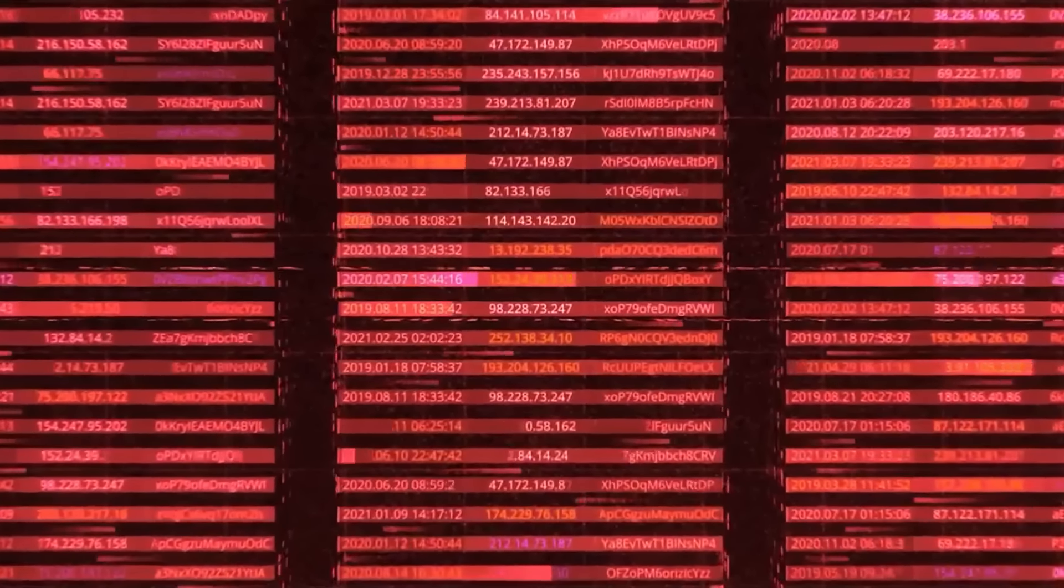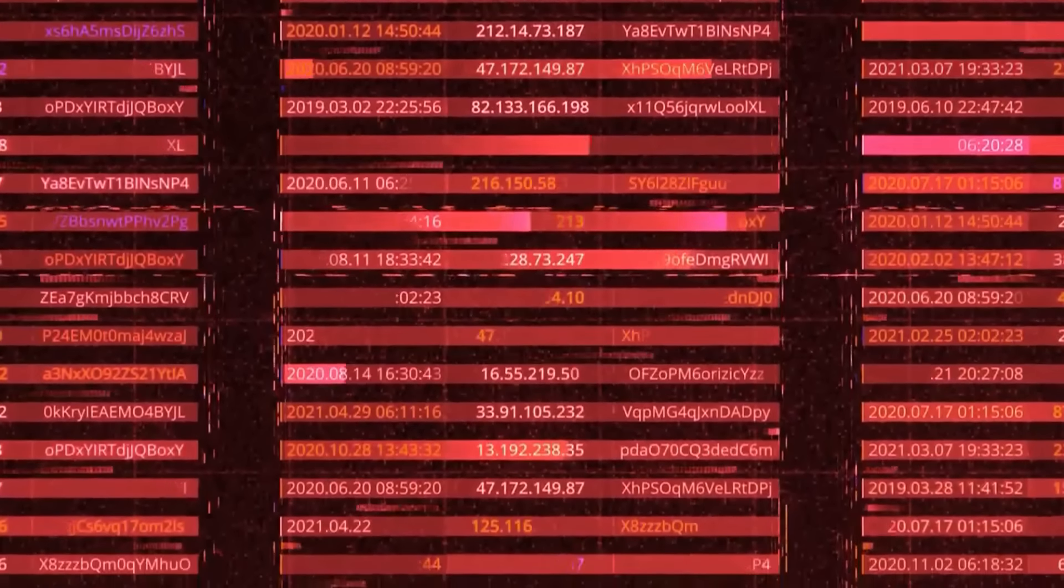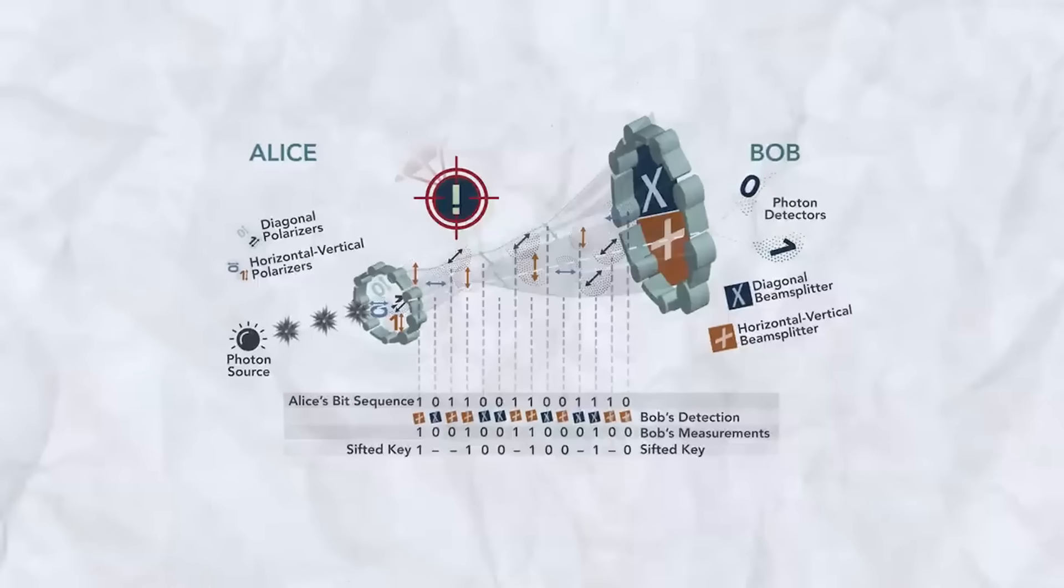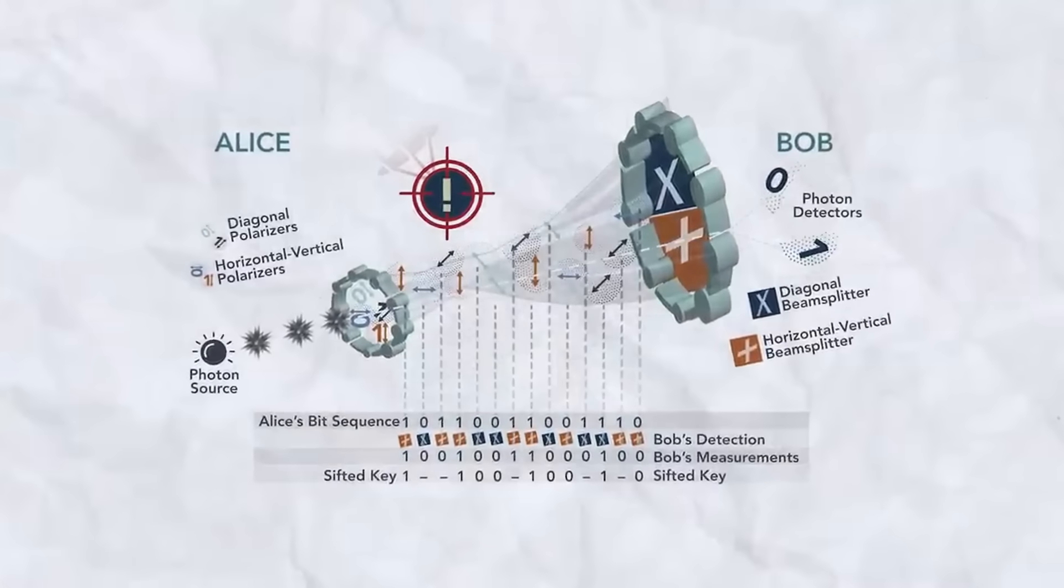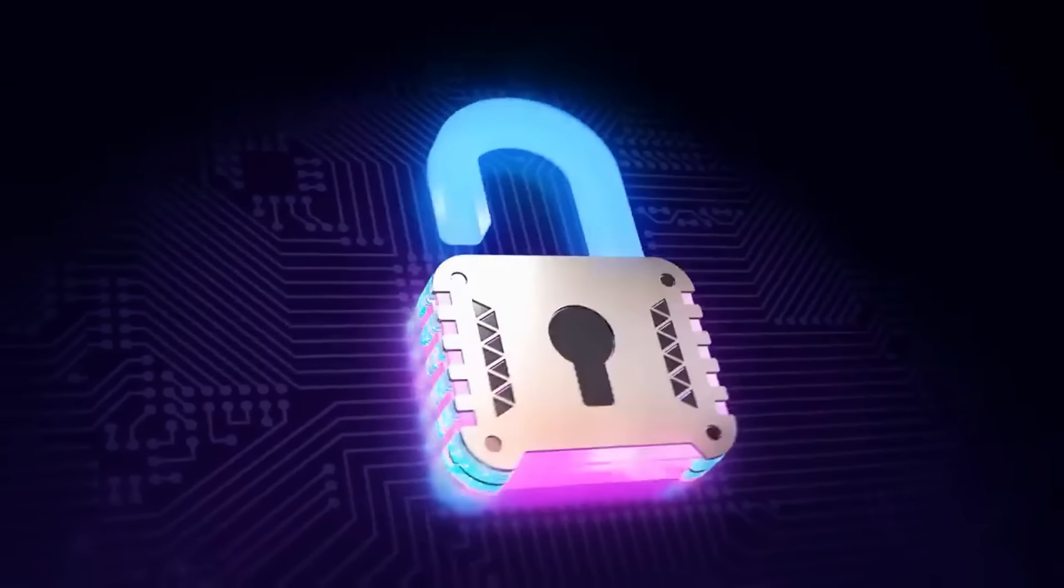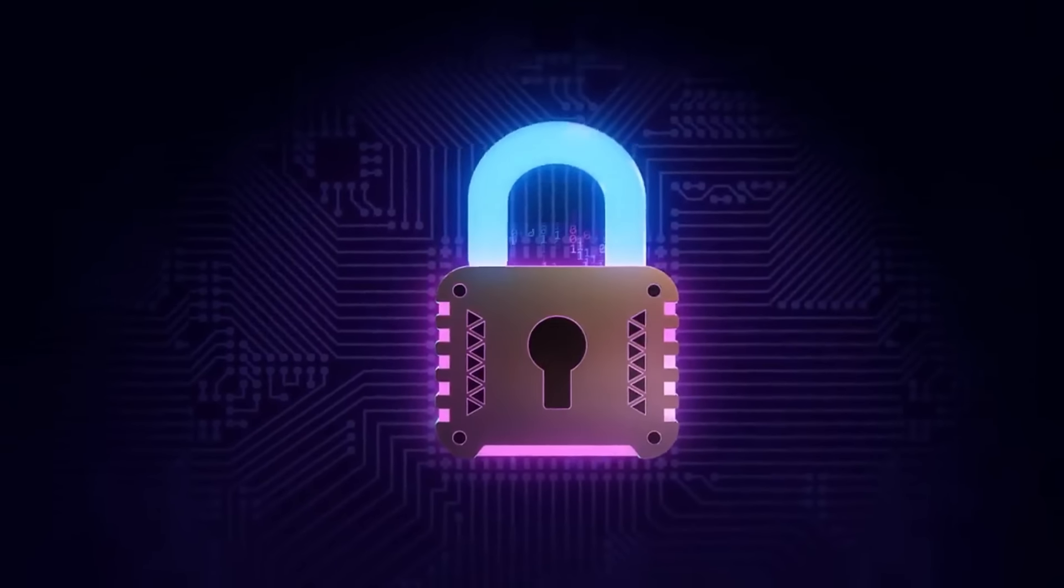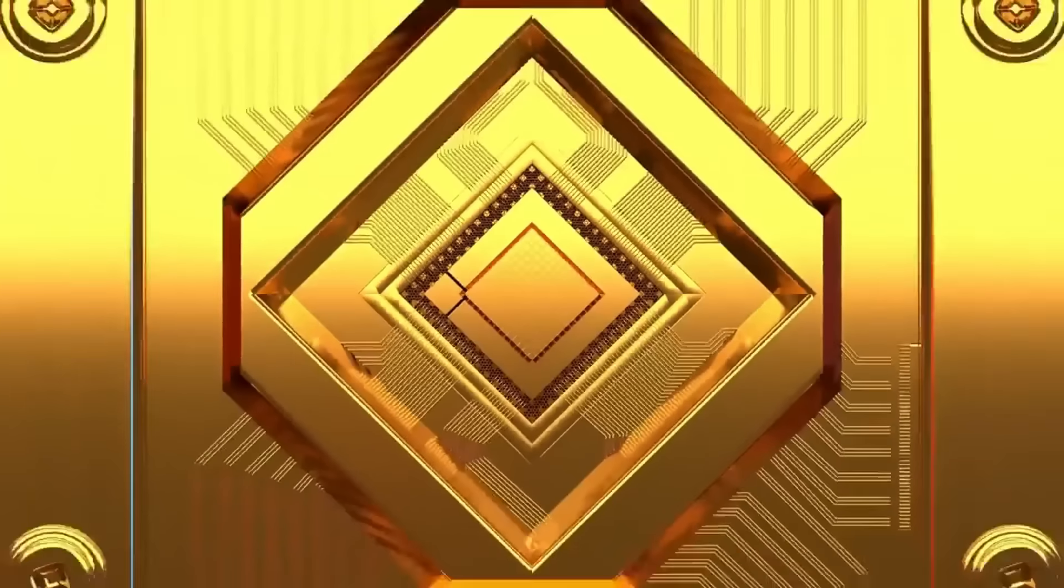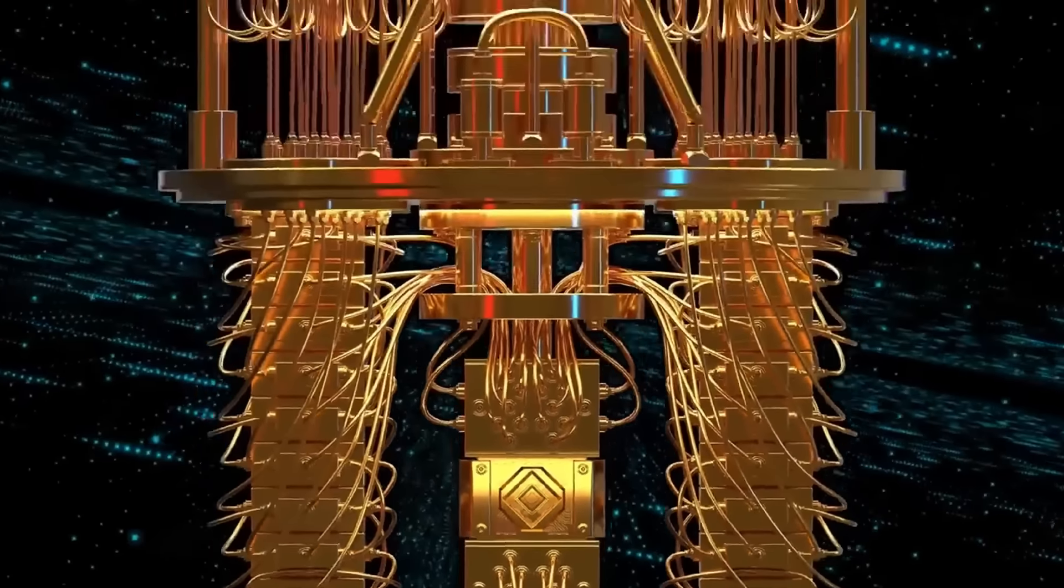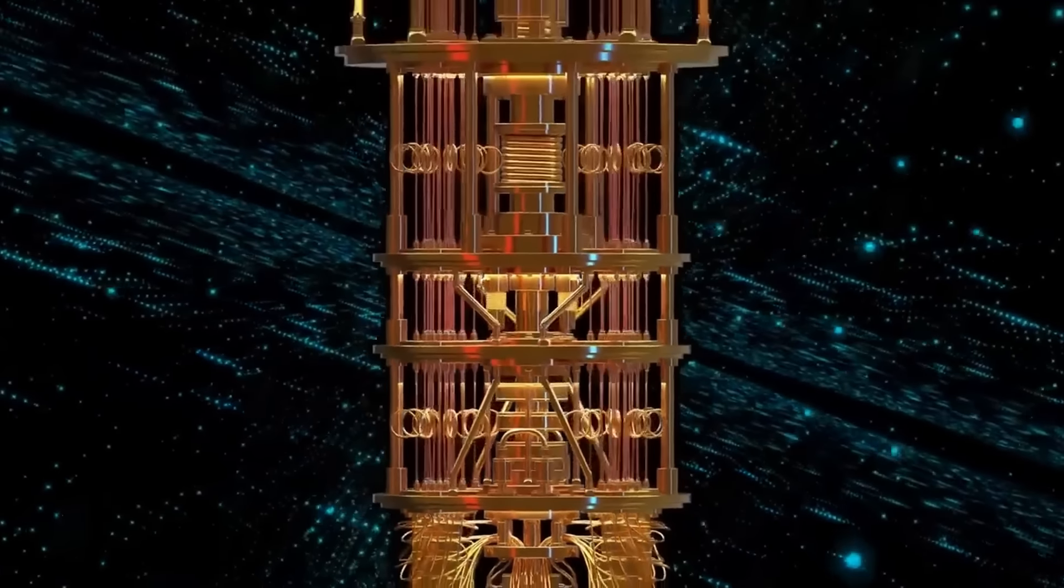It means we need to prepare for a future where the old ways of encryption might not be enough. Scientists are working on new methods, called quantum-resistant cryptography, to keep our data safe in the age of super-powered computers. The switch won't be easy. It's like upgrading all the locks in your house at once. But it's important. We need to be ready before quantum computers become powerful enough to crack the codes that keep our information hidden.